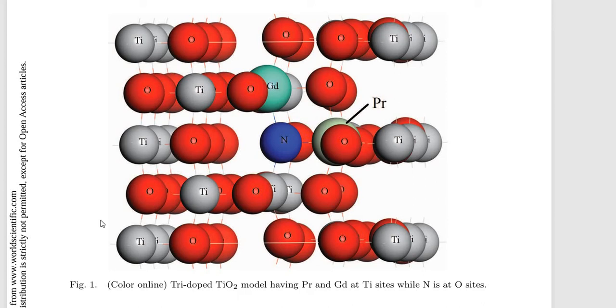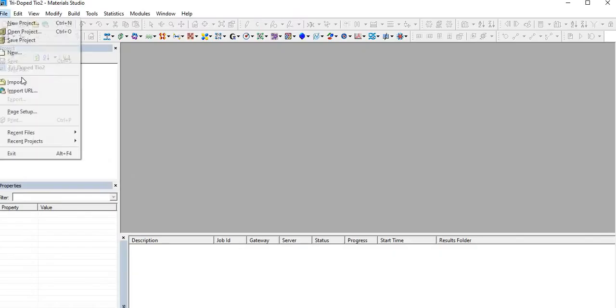In the lecture series of Material Studio, we are at lecture number 10. In today's lecture, we will try to reproduce one paper for tri-doped titanium dioxide with Pr, Gd, and N.